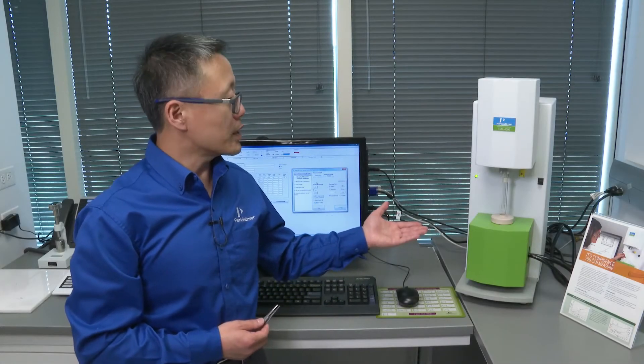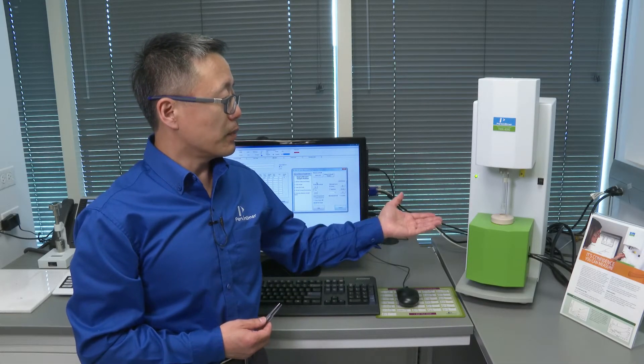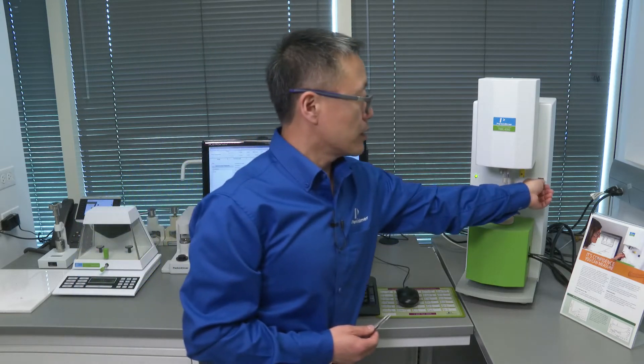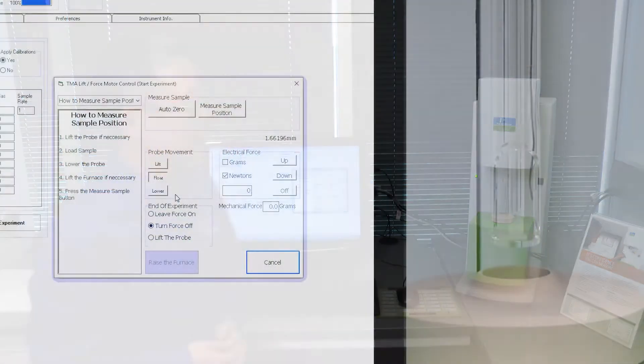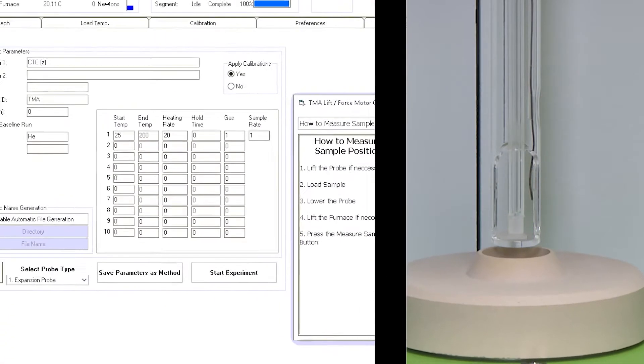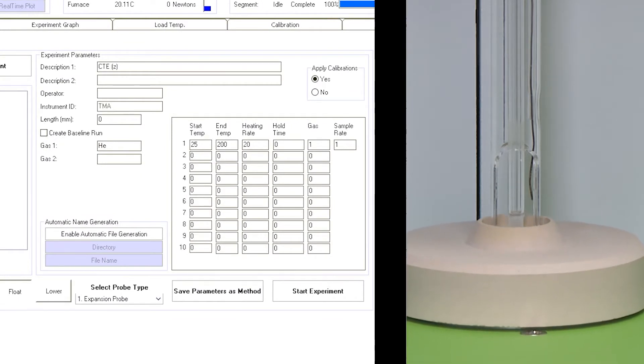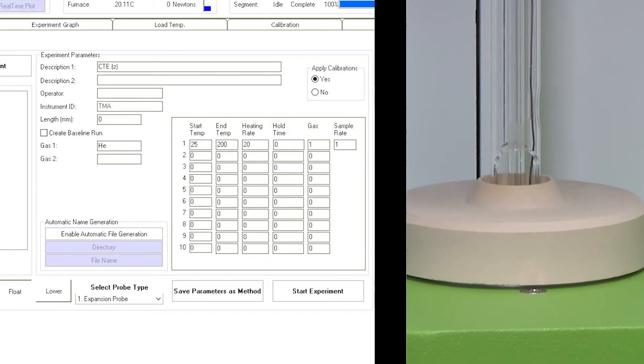Once the sample is placed on the platform, you can raise the furnace and set up the temperature program: starting temperature, ending temperature, scan rate, then you can start to run.